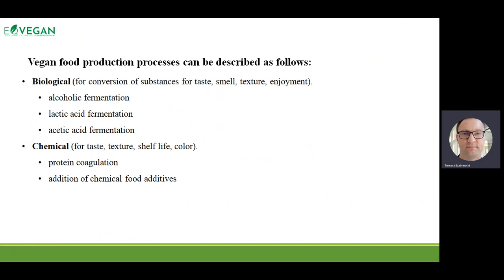From my experience, many typical manufacturers that produce meat products can use some part of the company to produce non-animal products. So the typical equipment can be used, the typical technologies can be used — sterilization, mixing, blending, and so on. It's not very complicated — it's just our imagination and how the results can look like.